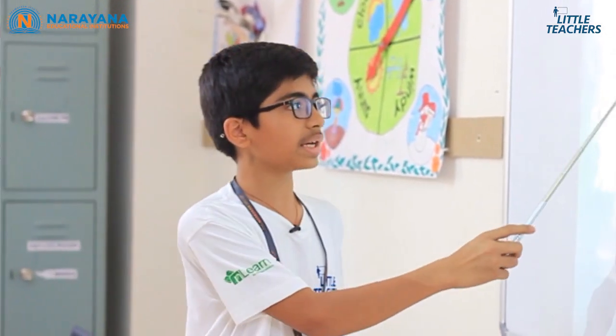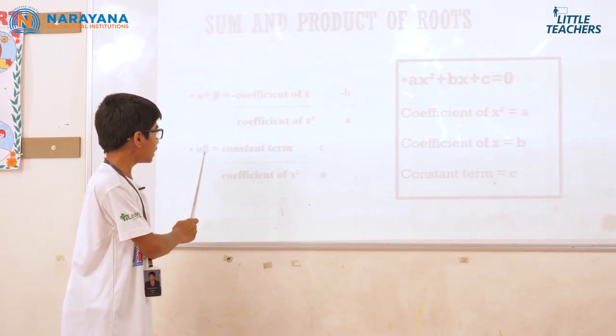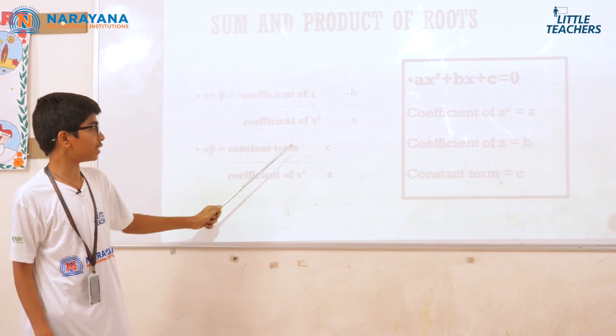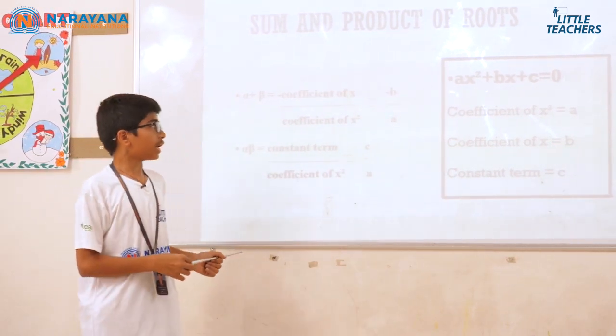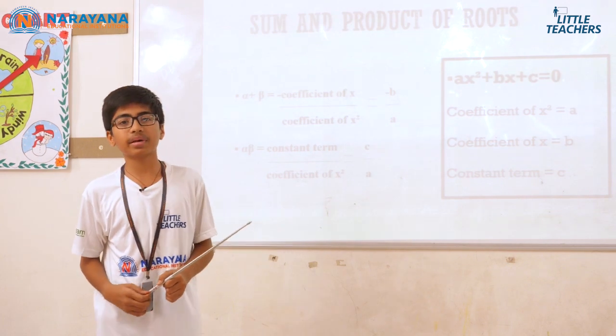Now let us find the sum and product of the roots. As we know, the roots are alpha and beta, and the equation is ax² + bx + c = 0. The sum: alpha + beta = −(coefficient of x) / (coefficient of x²) = −b/a. The product: alpha × beta = (constant term) / (coefficient of x²) = c/a. So we conclude that α + β = −b/a and αβ = c/a.